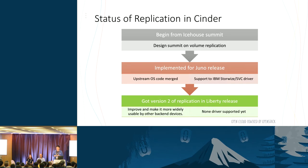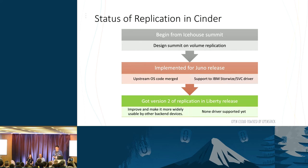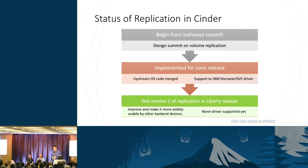We are familiar with backup, but let's look at the history of replication in Cinder. We talked about it at the OpenStack summit and implemented version one in the Juno release. We merged the upstream code and made support for the IBM storage driver. In the Liberty release, we got a new version called version two, written by Cinder core developer John Griffiths. We imported it and made it readily usable by other backend drivers, though there is no driver support yet.